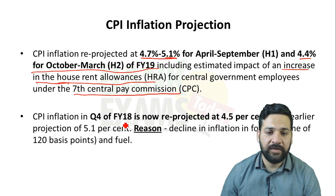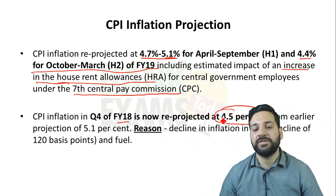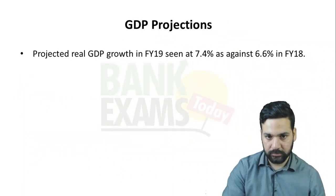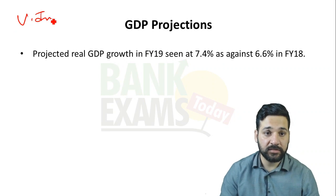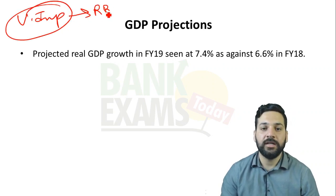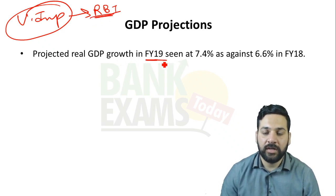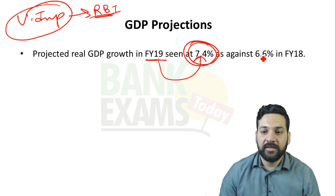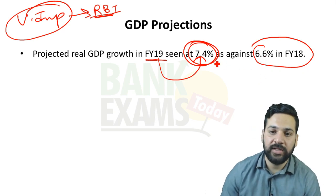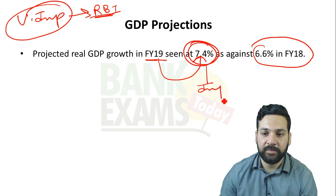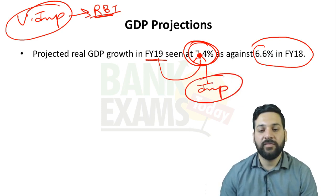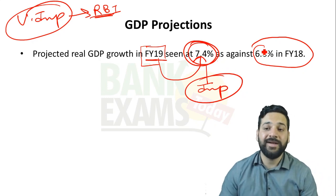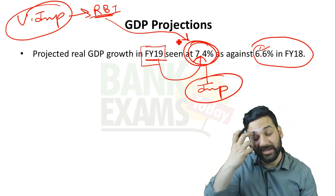CPI inflation in Q4 of financial year 2018 is now reprojected at 4.5%, due to a decline in food inflation. More importantly, the projected GDP according to the RBI for financial year 2019 is 7.4%, compared to 6.6% in financial year 2018. This GDP growth rate projection of 7.4% for FY2019 is a very important figure for the exam.